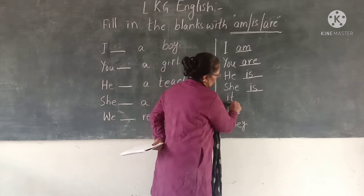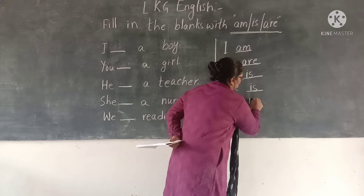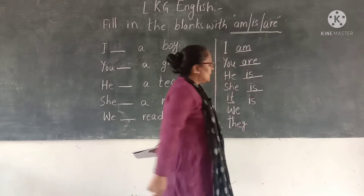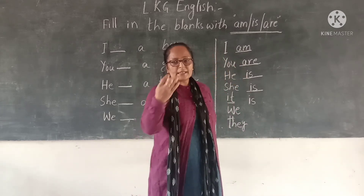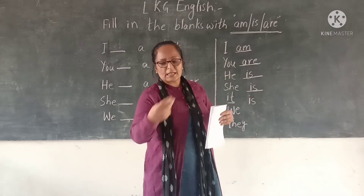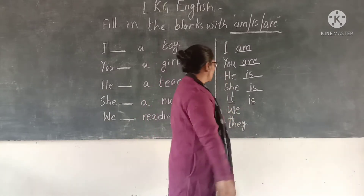It. After it also we write IS. It is a pen. It is a chalk. It is a table. It is a dog.